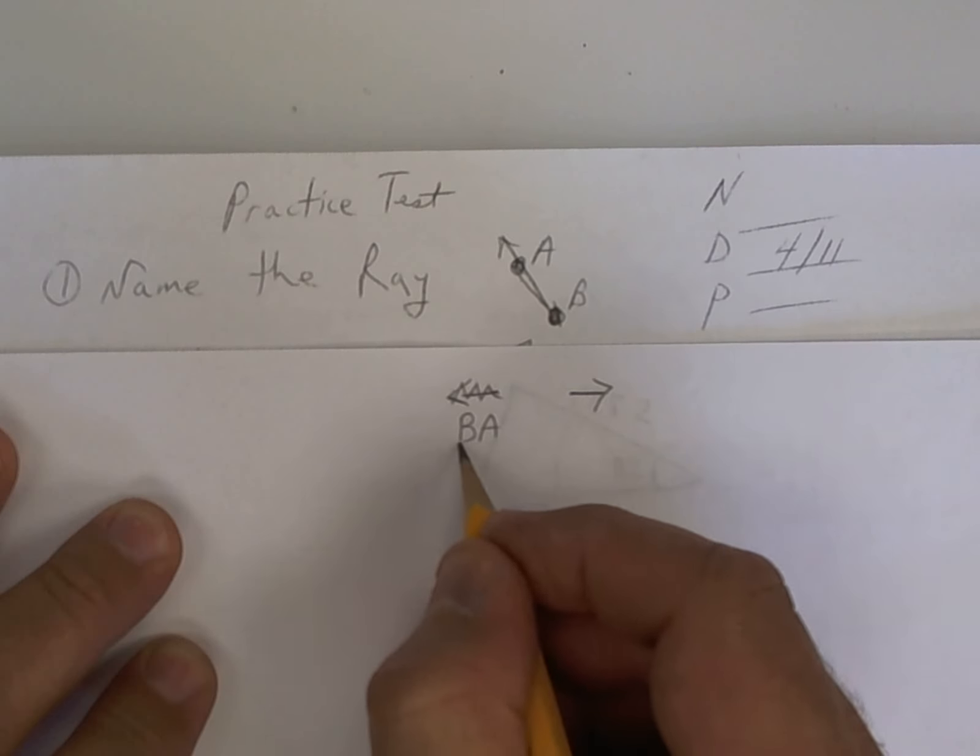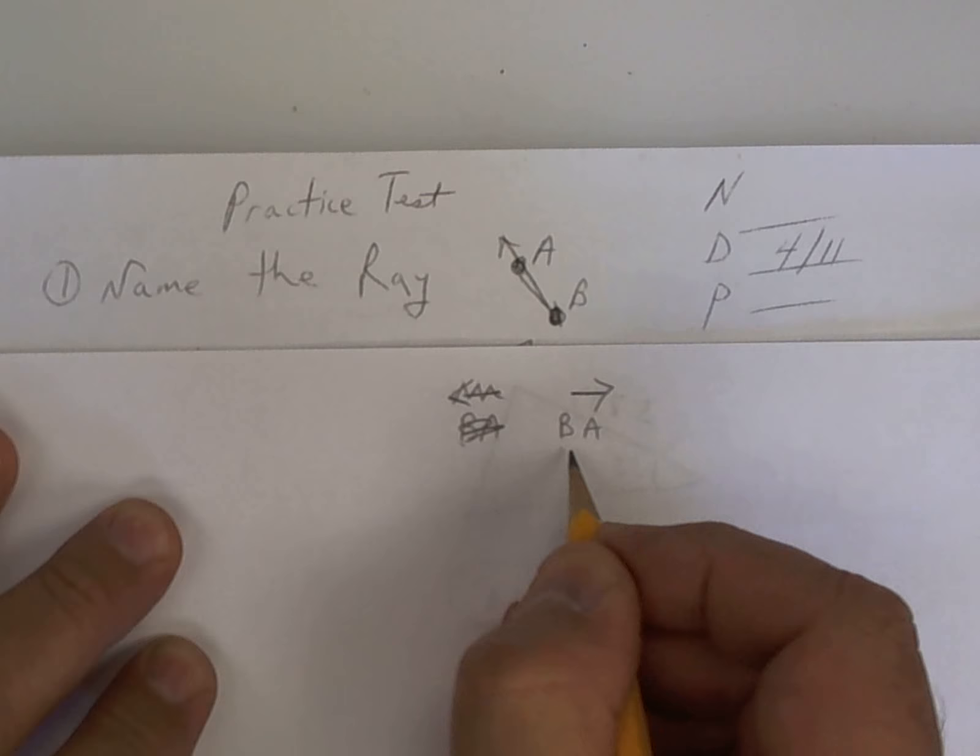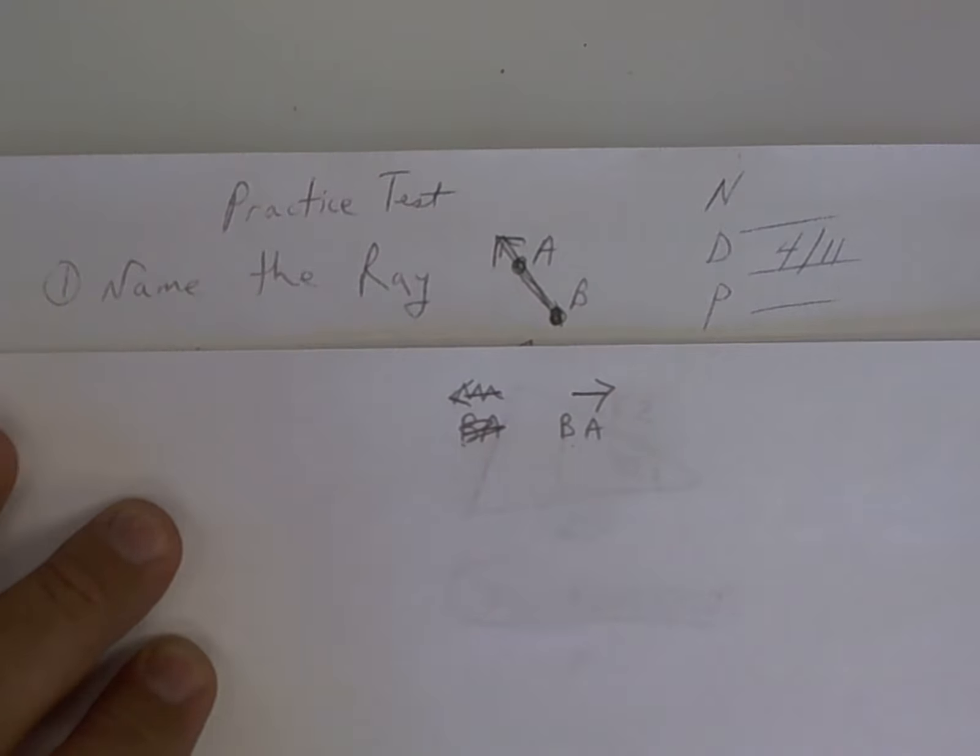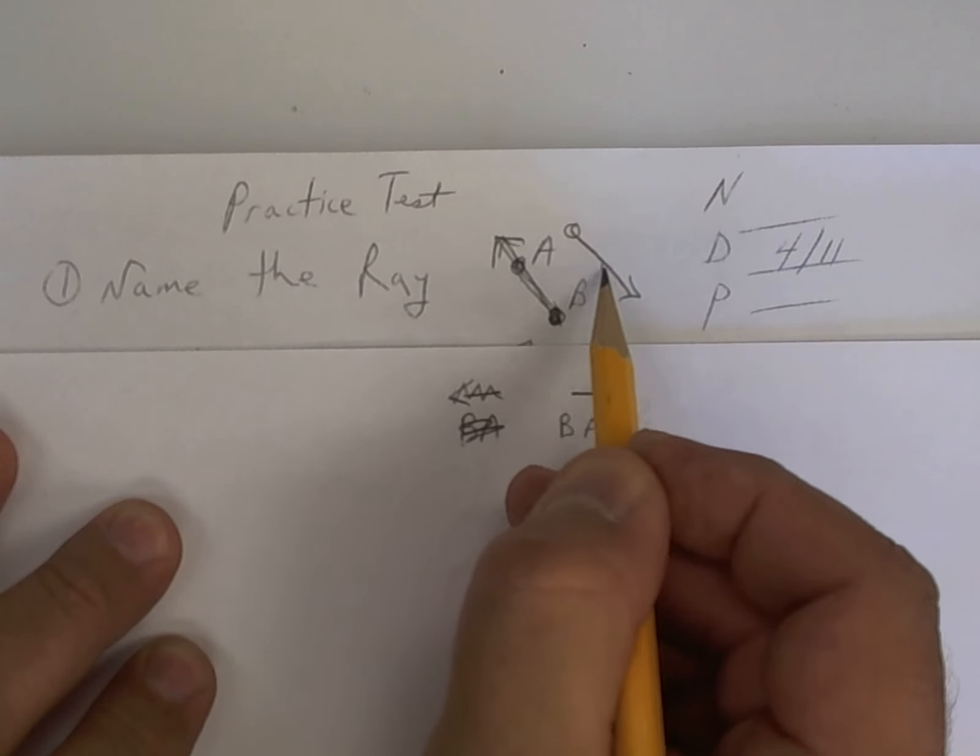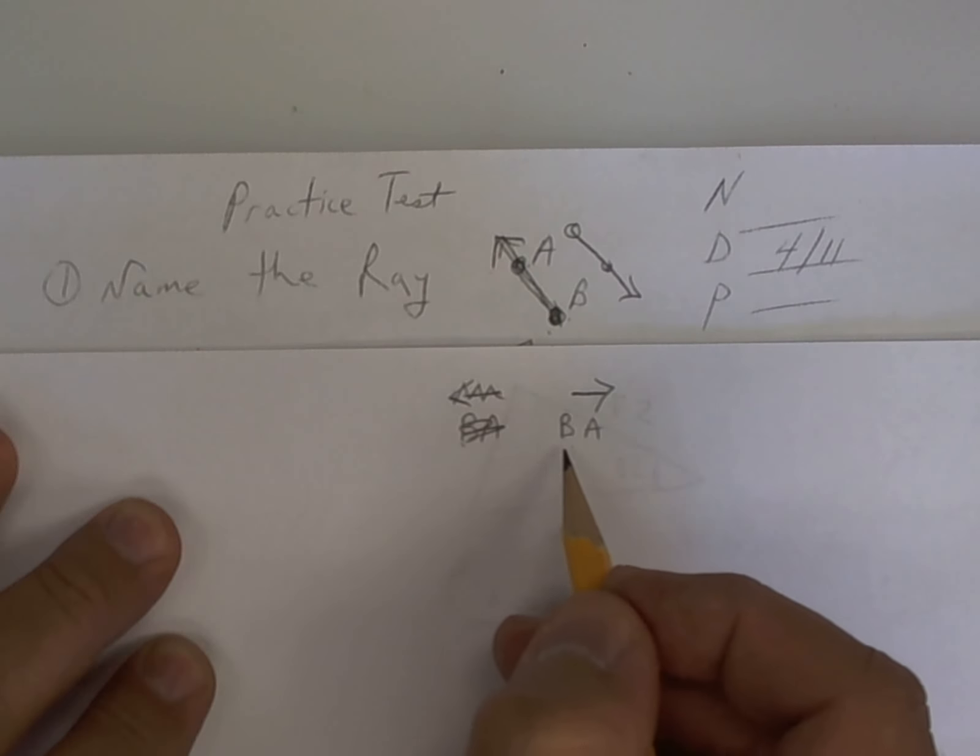The direction comes from the letters. You're starting at B, and you're going out to A. So it's ray B-A. If you say ray A-B, it would look like this. And we don't want ray A-B. We want ray B-A. Again, this is called the endpoint. End meaning it stops.